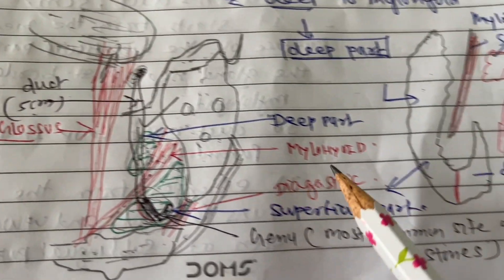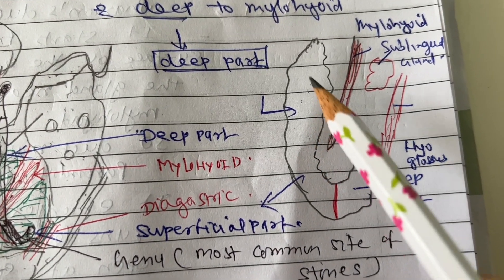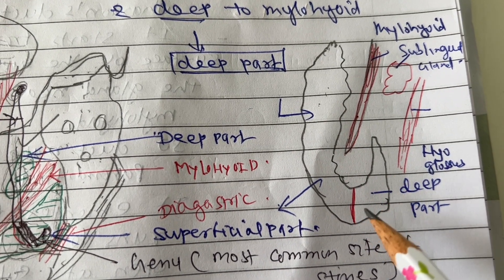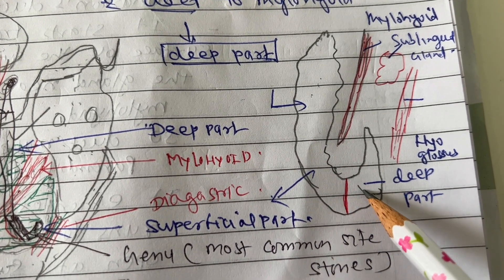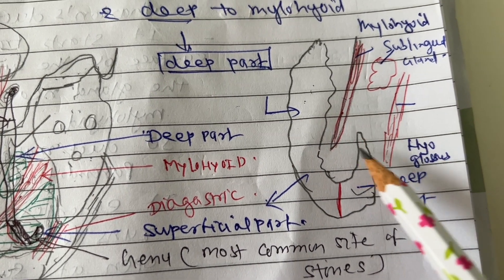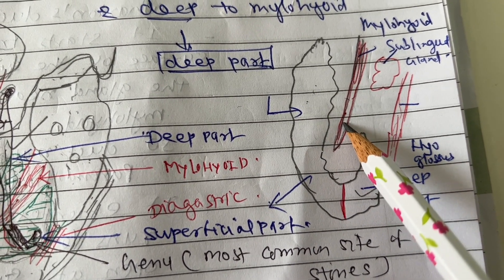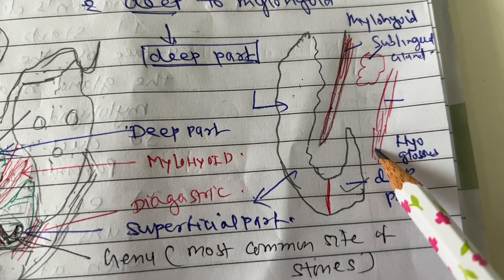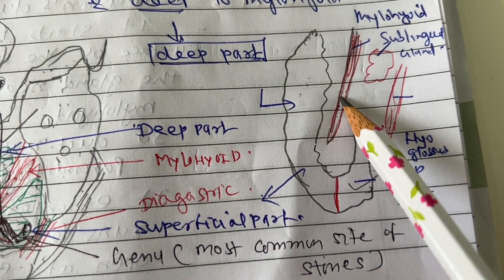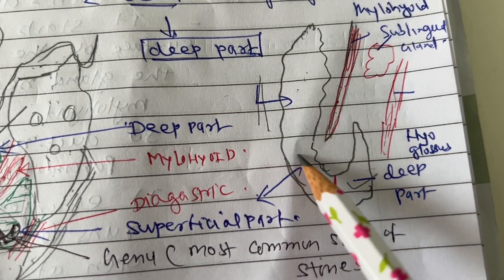Looking at the larger J-shaped picture of the submandibular gland, the deep part is deep to the mylohyoid muscle and is situated between the mylohyoid muscle and the hyoglossus muscle. The superficial part is situated between the mylohyoid muscle and the digastric muscle.